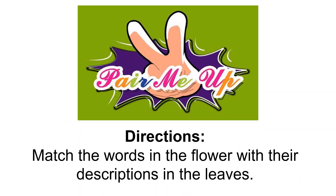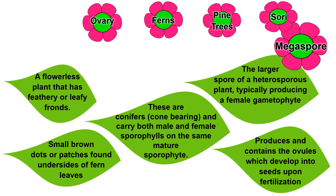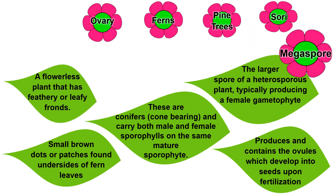Okay, so let's start with this activity called Permia. What are you going to do? Match the words in the flower with their description in the leaf. Let's start from Megaspore. Megaspore goes with this: it is the larger spore of a heterosporous plant, typically producing a female gametophyte.